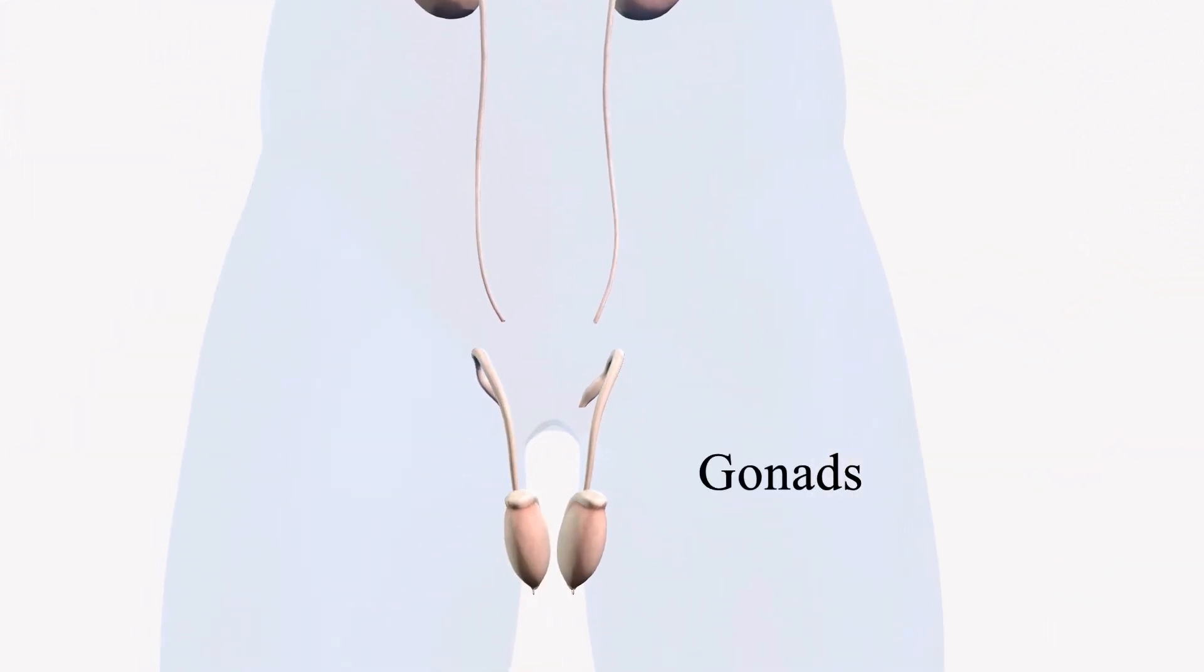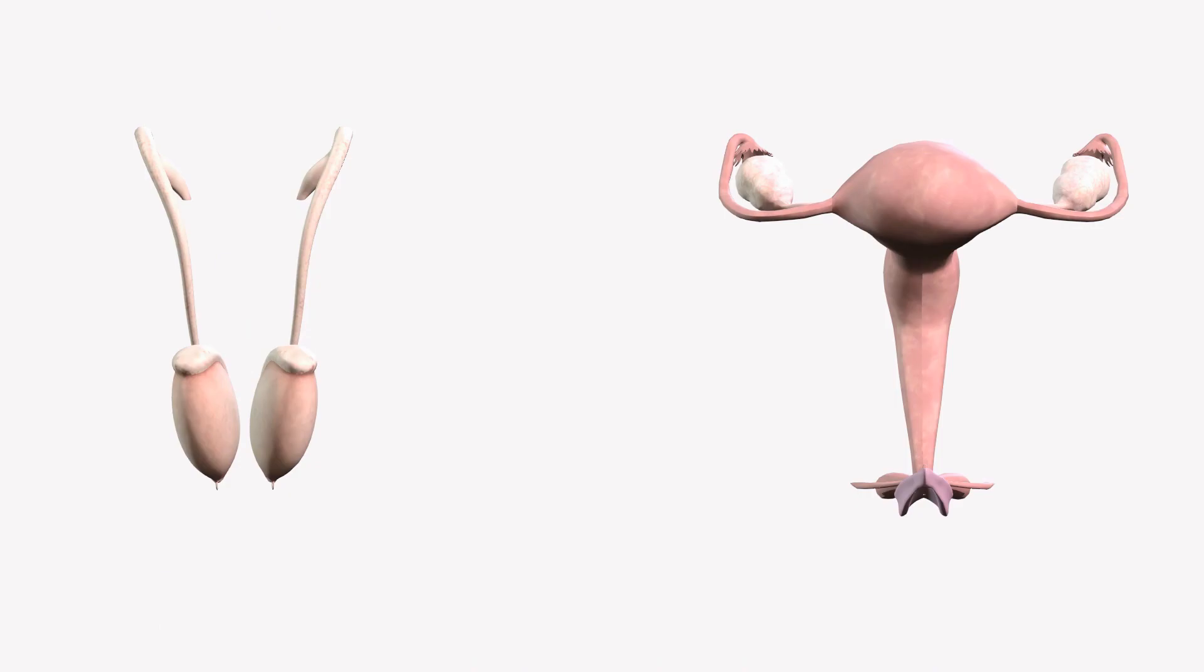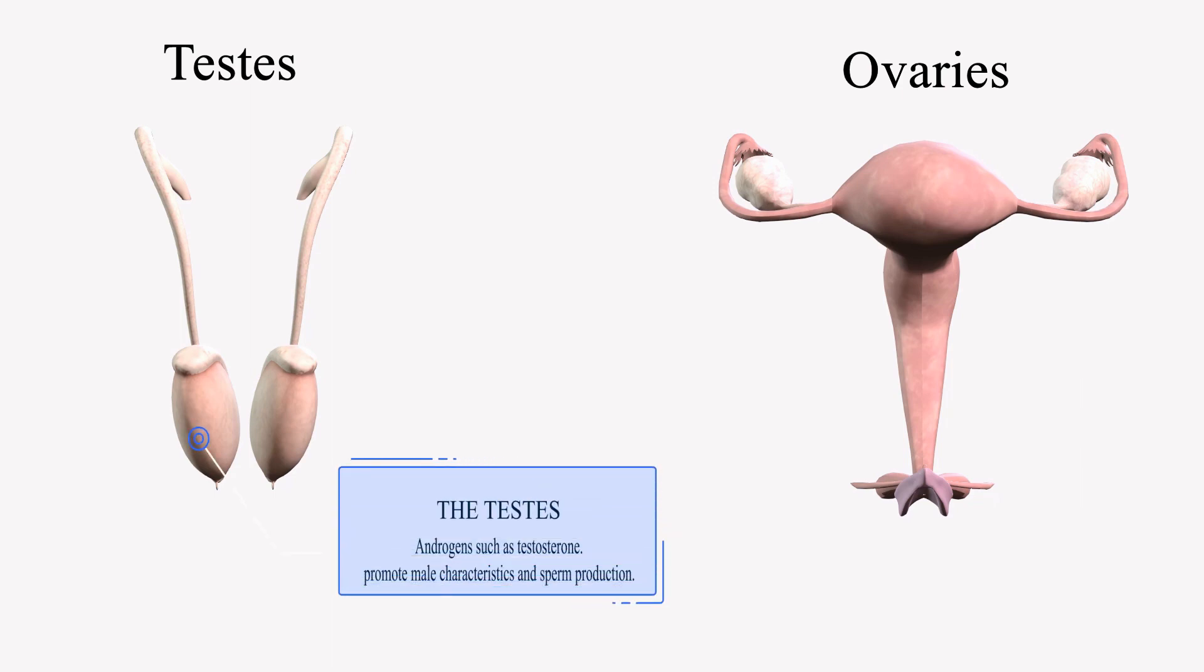The last endocrine glands are gonads. Because we have a male and female version of humans we have two types of gonads. We have the testes for the male and the ovaries for females. In the testes we have cells that secrete androgens such as testosterone, which is important for promoting male characteristics as well as sperm production.